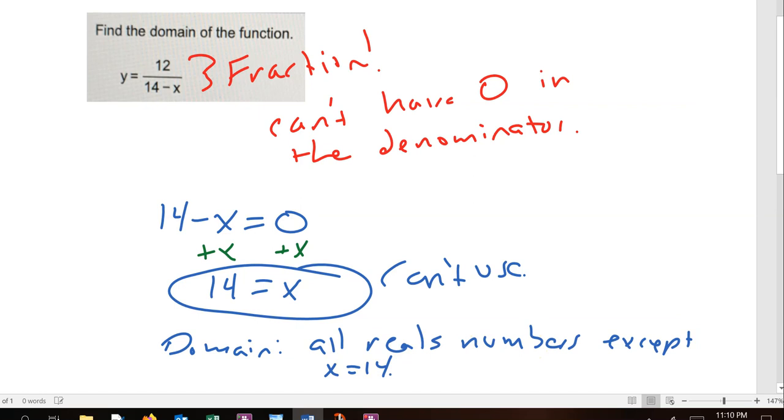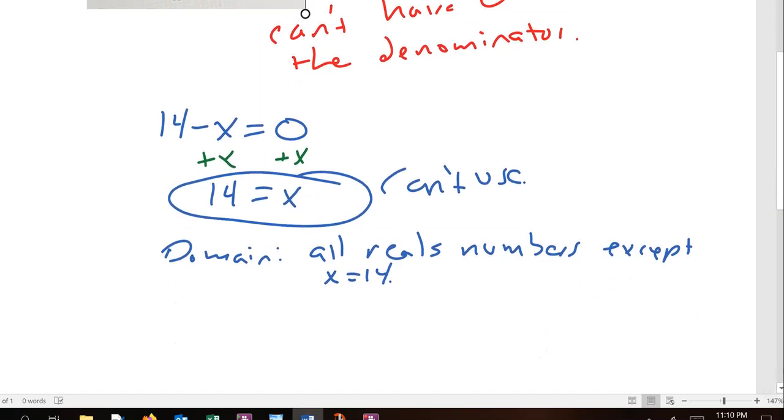In interval notation, that would be everything from negative infinity to 14 with a parenthesis, because we can't include 14, and everything above 14. So we use parentheses again. This would be everything except for 14, because this interval is all the numbers smaller than 14, and this is all the numbers bigger than 14.